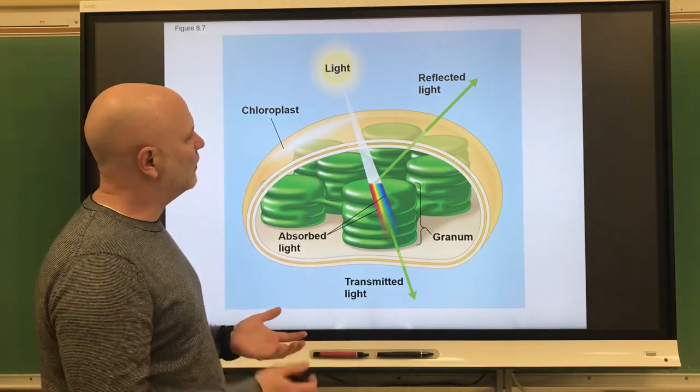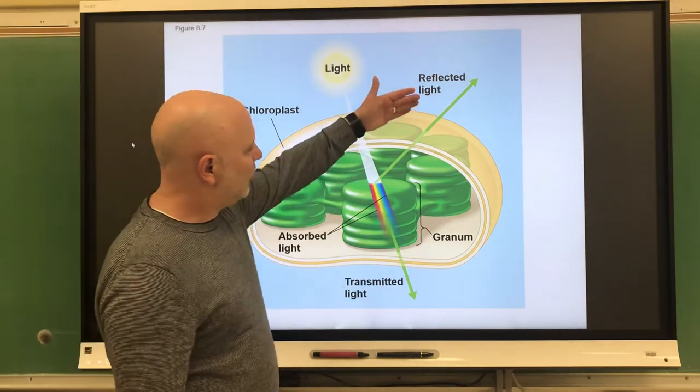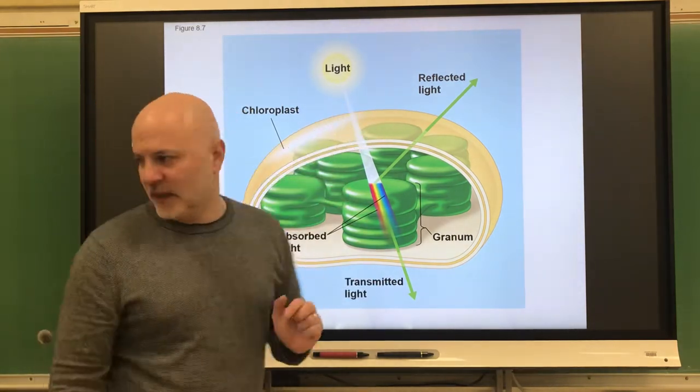So pigments are going to do one of three things: transmit the light, they're going to reflect the light, or they're going to absorb the light.